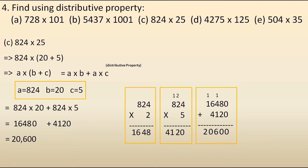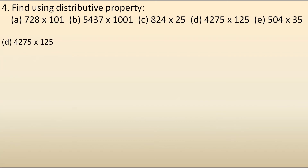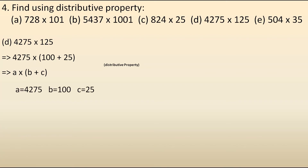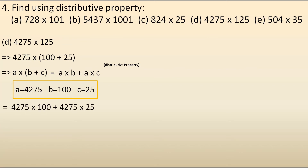Now let's move to the fourth: 4,275 into 125. Here we will split 125 as 100 plus 25. Distributive property: A is 4,275, B is 100, C is 25. It becomes 4,275 into 100 plus 4,275 into 25. The answer of 4,275 into 100 is 4,27,500. We could further split 25 as 20 plus 5, but it gets complicated, so we will directly multiply 4,275 into 25.